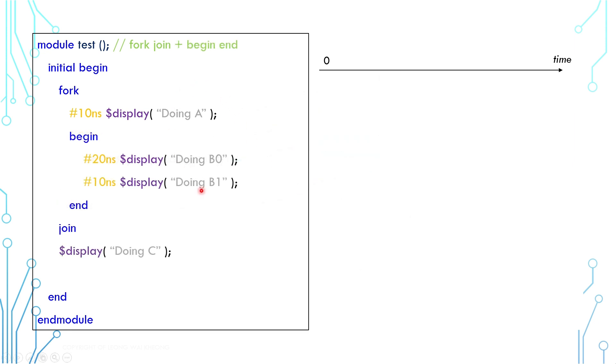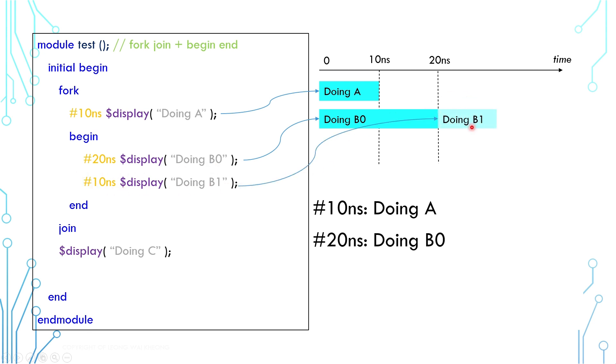Let's say we want A and B to run in parallel, and B0 to run first, and B1 to run after that. We can use a begin-end block within the fork join to create a sequential execution. In this example, A and B0 start at time 0. A finishes at 10 nanoseconds, and B0 finishes at 20. This is also where B1 starts. B1 will continue for an extra 10 nanoseconds, and C will kickstart.